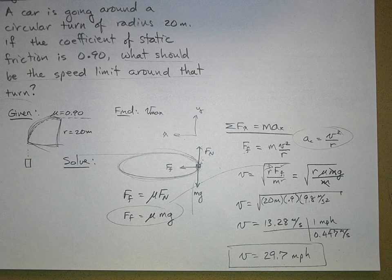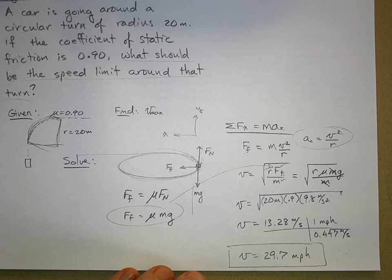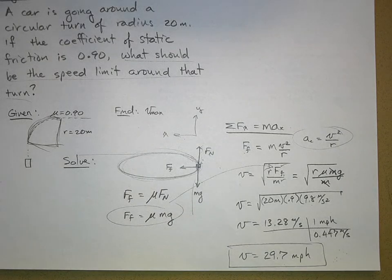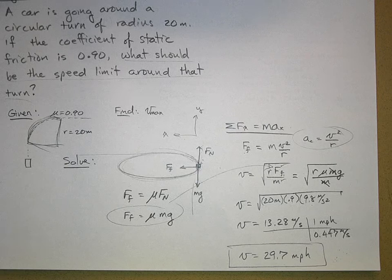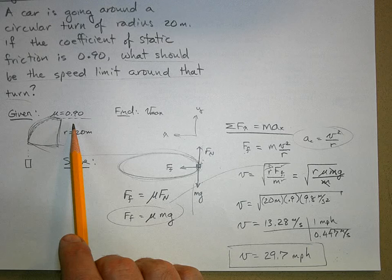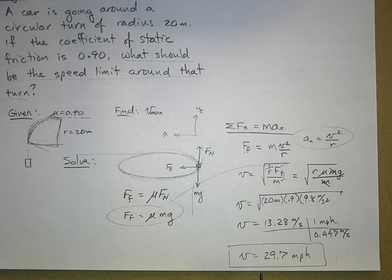Because everyone's going to crash. So you would probably pick something lower. Now this 0.9—is that when the road is dry probably? So you would need to investigate, is this the coefficient of static friction when the road is wet, like if it rains?